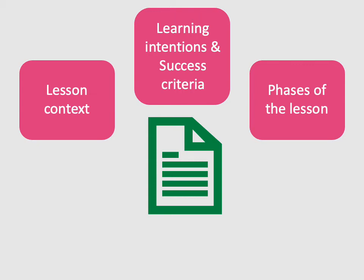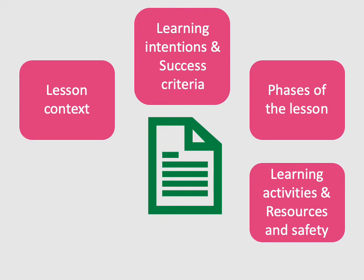Once you know what you want pupils to learn, you need to think about the phases of the lesson and how to structure it. The waistcoat lesson is in six phases, and within those phases we think about the learning activities pupils will engage in and the resources needed. For any design and technology lesson it's also important to think about health and safety issues related to those planned activities — for instance, whether pupils are moving around the classroom and whether it is safe to bring things out.